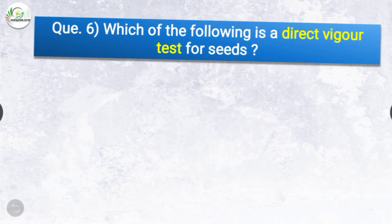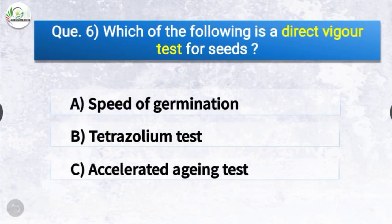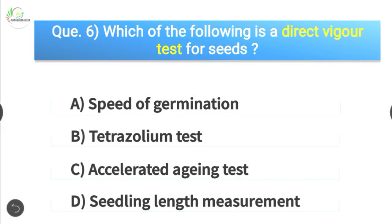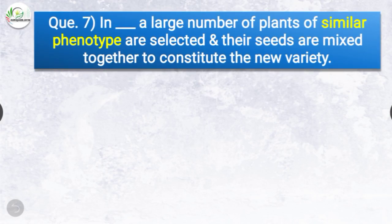Question number six: Which of the following is a direct vigor test for seeds? The options are speed of germination, tetrazoleum test, accelerated aging test, or seedling length measurement. The correct answer is option C — accelerated aging test. Accelerated aging test is a direct vigor test for seeds.